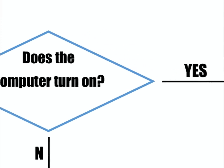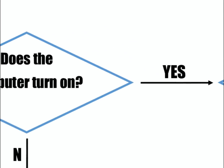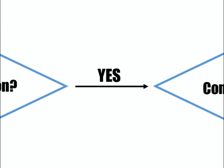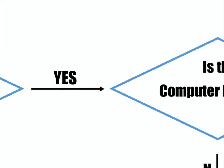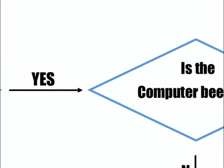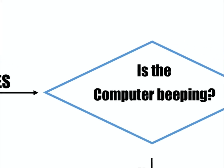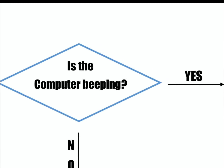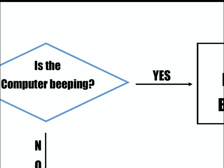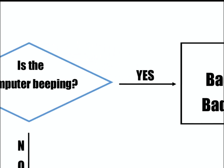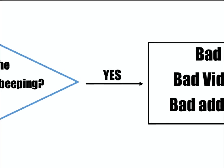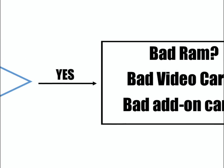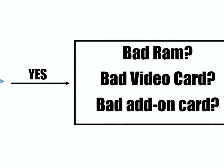Let's assume for a minute that your computer is turning on — you're getting fan noise, you're getting lights on the front. The next step would be to see if there are any beep codes coming out of the computer. If there are beep codes, that usually means that the motherboard and the power supply are functioning properly, because the beep codes are usually generated by the motherboard.